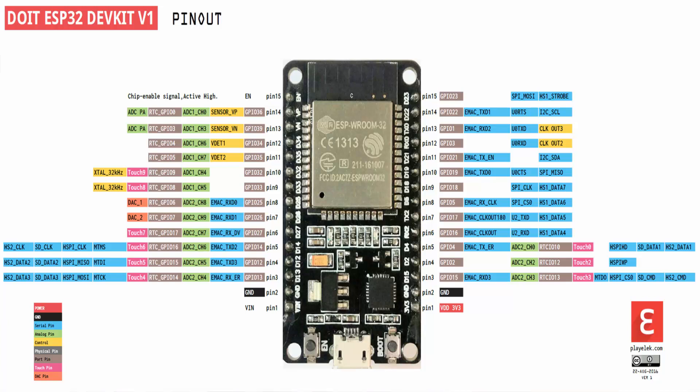Let's look at the general purpose input output pins of the ESP32 development board. As you can see in this block diagram, in this tutorial we are using the ESP32 DevKit. The ESP32 DevKit has 30 pins, but not all of these pins can be used as general purpose input output pins. The 30-pin version of ESP32 DevKit supports only 24 pins as GPIO pins, and out of those 24 pins, 6 pins can only be used as digital input pins.